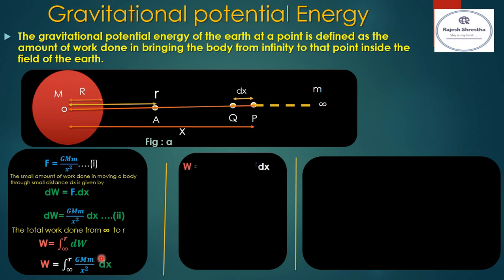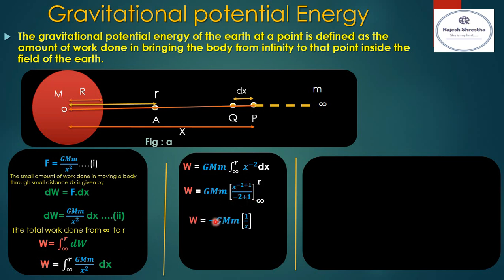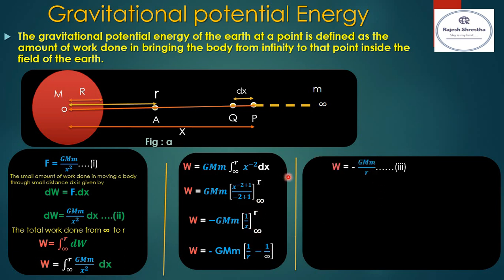Since GMm is constant, we take it outside the integral, giving W = GMm ∫(∞ to r) x⁻² dx. Solving this, using the power rule where −2 + 1 = −1, we get W = GMm [−1/x] evaluated from ∞ to r. Substituting the limits r and infinity, we get the final result: W = −GMm/r. This is equation 3, the required expression for gravitational potential energy.